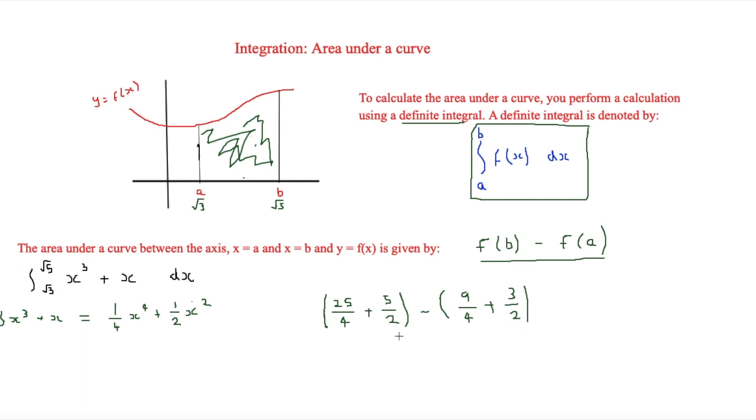A bit more simplifying, then you'll get 35 over 4 minus 15 over 4. And that is equal to 5. Therefore, you know that the area under this curve between root 3 and root 5, and the curve is x cubed plus x, is going to be 5.